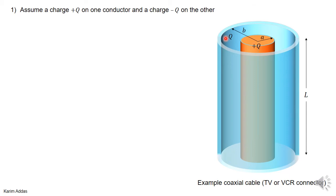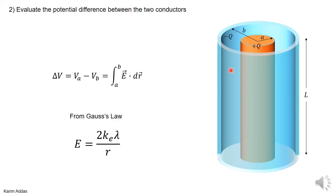So the first step is we put a charge plus Q on the inner conductor and a charge minus Q on the outer. The second step is to find the potential difference between the conductors. The potential is everywhere the same inside a conductor, so we want to get the potential at point A (radius a) minus the potential at point B — that is, VA minus VB. To evaluate this, we need to know the electric field in the region between the two conductors, which you've done in detail in the chapter on Gauss's law.